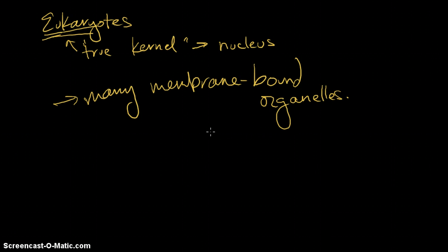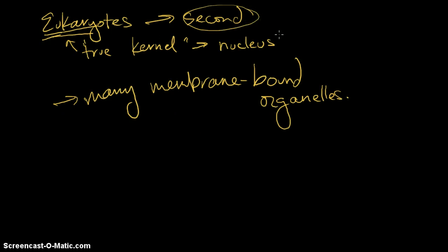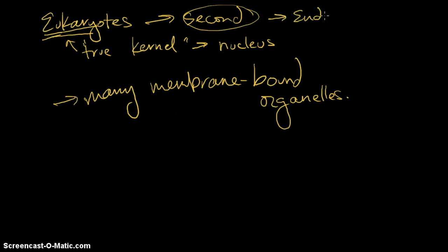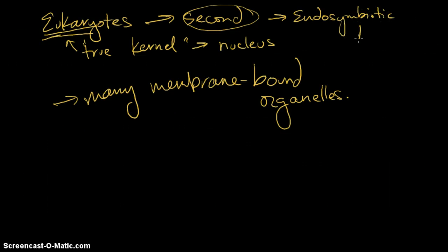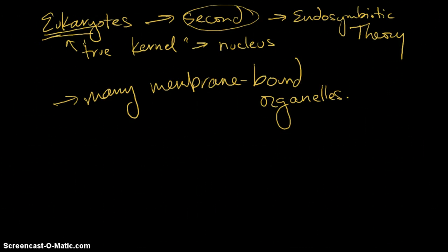If prokaryotes came first, we think that eukaryotes came second or later, and we'll talk a little bit about that later when we talk about the endosymbiotic theory. All right, so let's go ahead and talk about plants and animals, which are both eukaryotic kinds of cells.